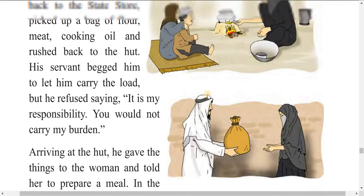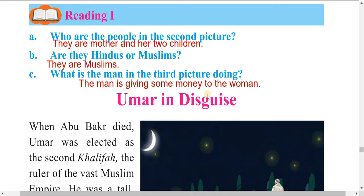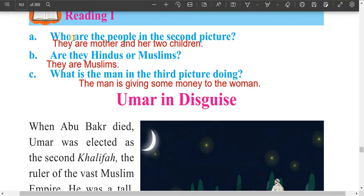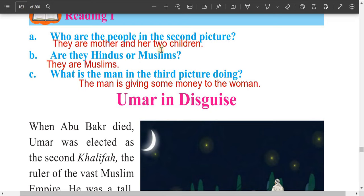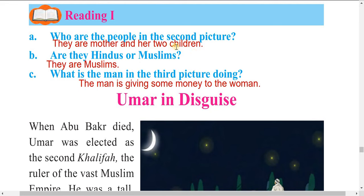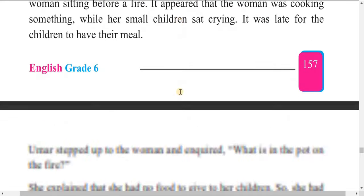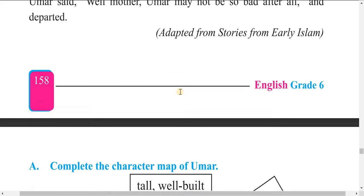We will read this story. I am sure your teacher has explained it to you. If you have any confusion, you can write to me. Who are the people in the second picture? They are a mother and her two children. Are they Hindus or Muslims? They are Muslims — you can see from their dress. What is the man in the third picture doing? The man is giving some money to the woman. This is the story of 'Omar in Disguise.'